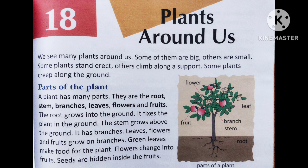First of all, let us study about different parts of the plant. A plant has many parts. They are the root, stem, branches, leaves, flowers, and fruits. The root grows into the ground.